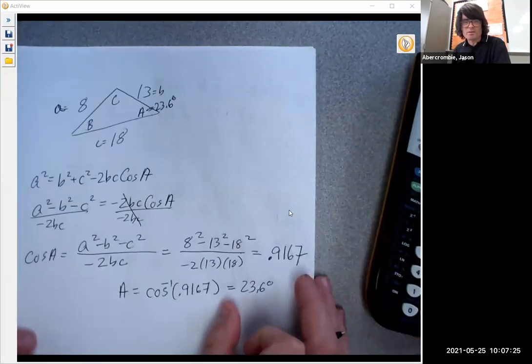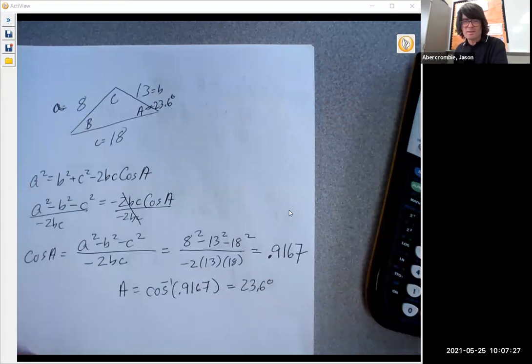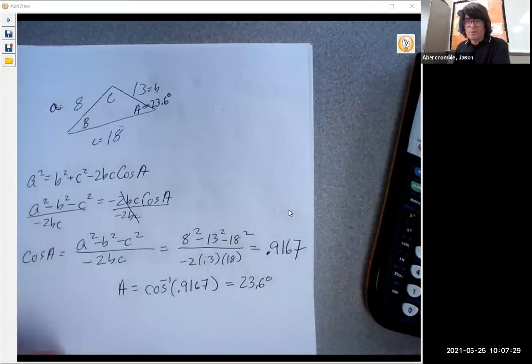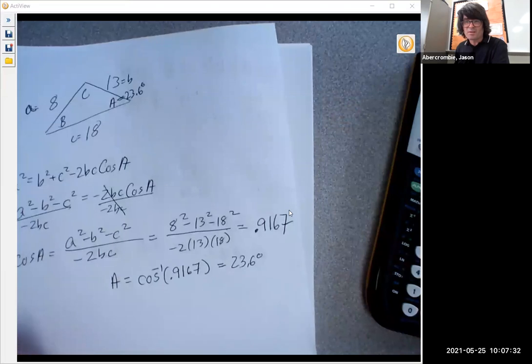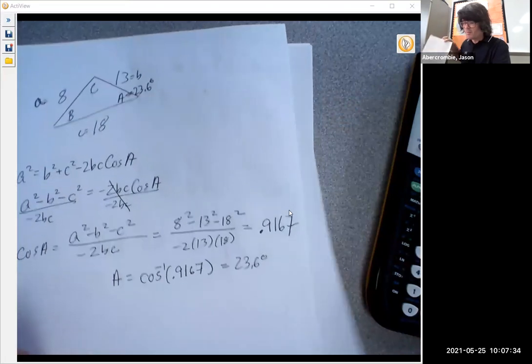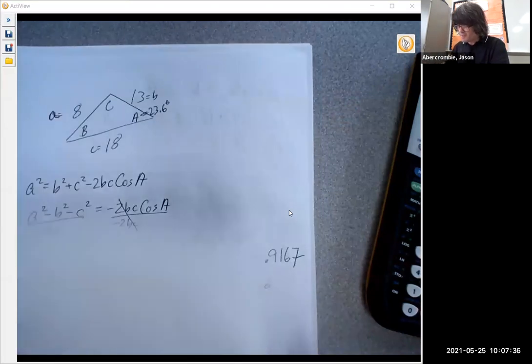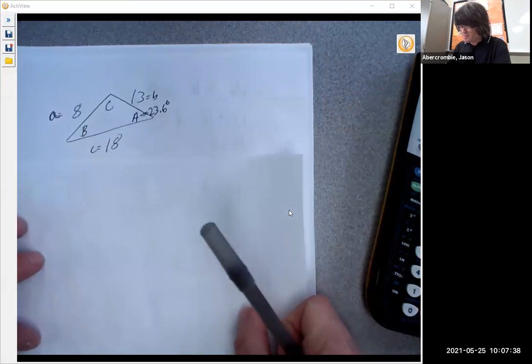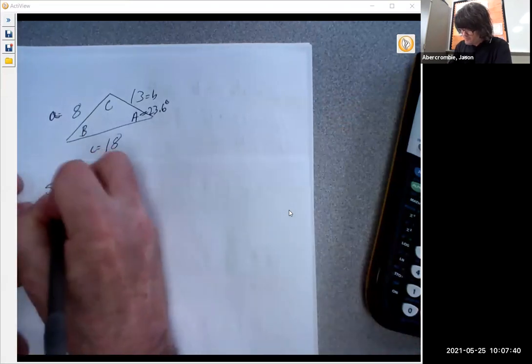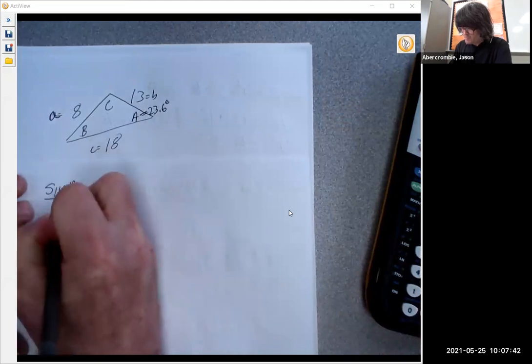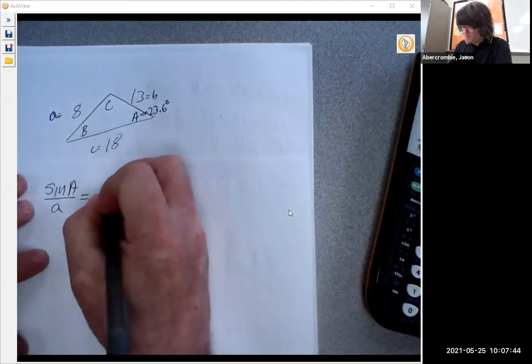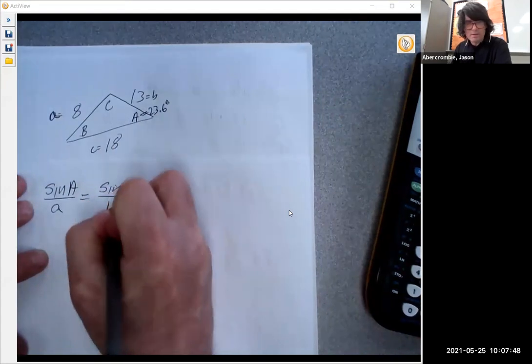And now let me show you a trick here. You've got some options. You can either do the law of cosines again, or you could go back to the good old law of sines, which is actually a little bit simpler, and maybe find angle B. Let's do the law of sines and just practice that. The law of sines said this. It's your choice. You can do law of cosines again. Once you get one angle, you can do whatever you want.